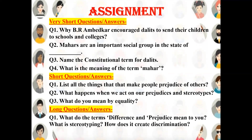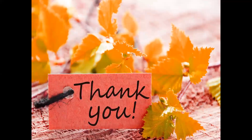Now let us look at a few questions. Question one: Why did Dr. Bhim Rao Ambedkar encourage Dalits to send their children to school and colleges? Question two: Mehers are an important social group in the state of? Question three: Name the constitutional term for Dalits. Question four: What is the meaning of the term Meher? Short answer questions: List all the things that make people prejudiced of others. What happens when we act on our prejudice and stereotypes? What do you mean by equality? Long answer: What do the terms difference and prejudice mean to you? What is stereotyping and how does it create discrimination? Students, you are requested to solve these questions with the help of reading this chapter and watching this video. Thank you.